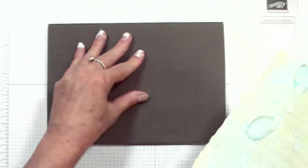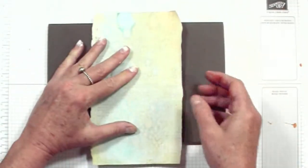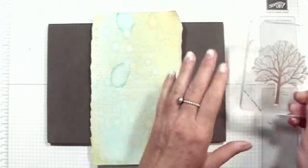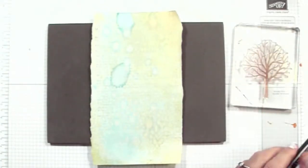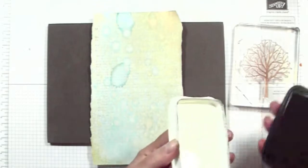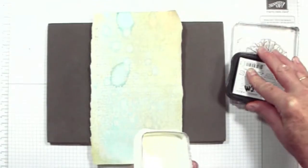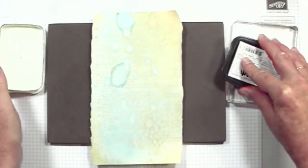Okay, I've got my Stampin' Pierce mat out. It's just going to give me some cushioning when I stamp with my polymer set. I've got my branches mounted onto a clear block, and I'll just ink that up with the Memento ink.